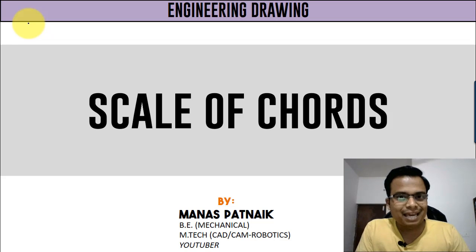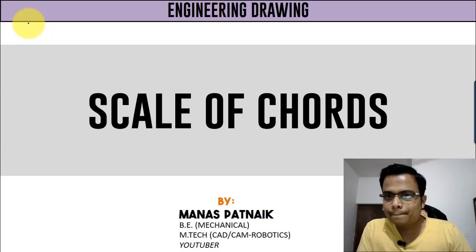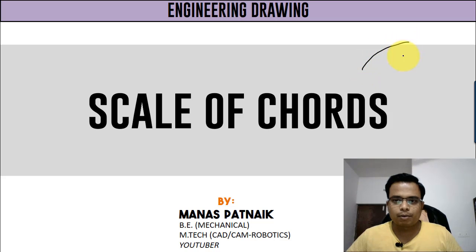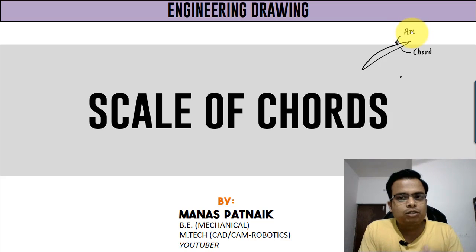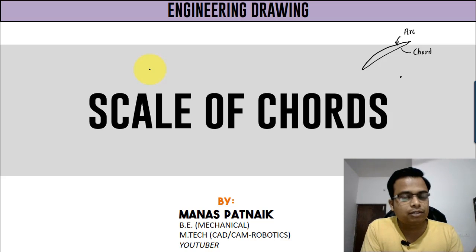We're going to kick off today's session with the scale of chords. What is this scale of chords? A chord is associated with an arc. If you have a starting point of an arc and a center, joining those two points with a straight line gives you a chord. Now, what connection does this chord have with the scale? If you do not have a protractor, the only other option to measure angles is by constructing a scale of chords.